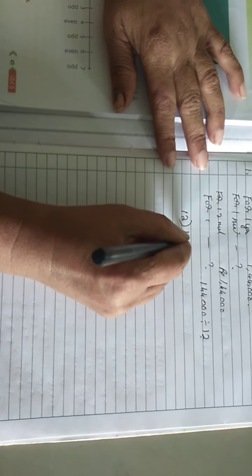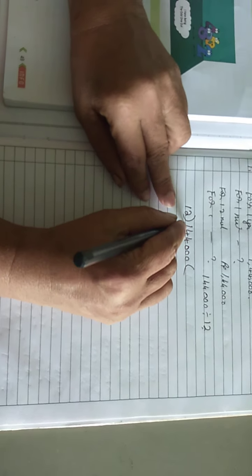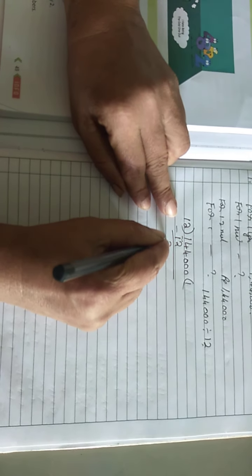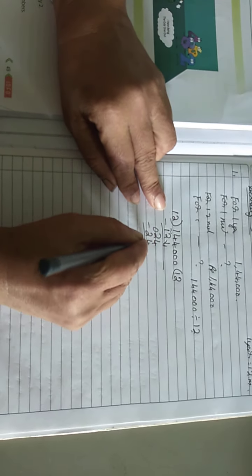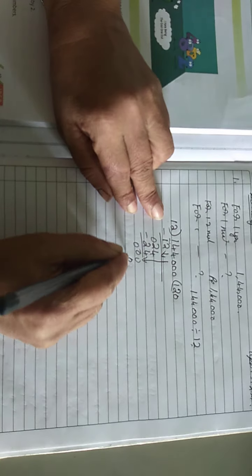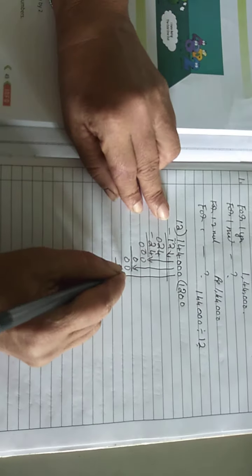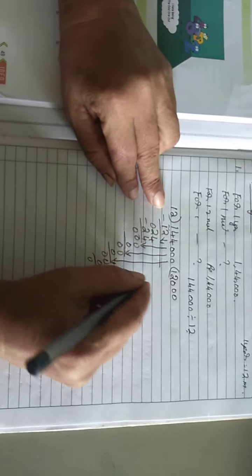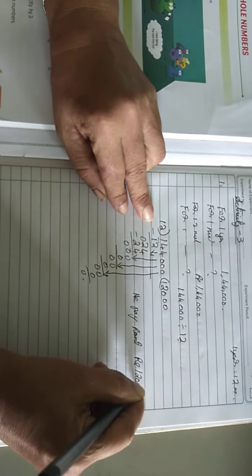So from 12 you divide 1,44,000. 12 ones are 12 — 2 digits I will take. Here 12, here 40, so it is possible. 12 ones are 12. 4 minus 2 is 2. Now I will take 4: 12 2's are 24, 4 minus 0 is 0. Now take another 0: 12 0's are 0. Take another 0: 12 0's are 0. So rent he has to pay is Rs. 12,000.